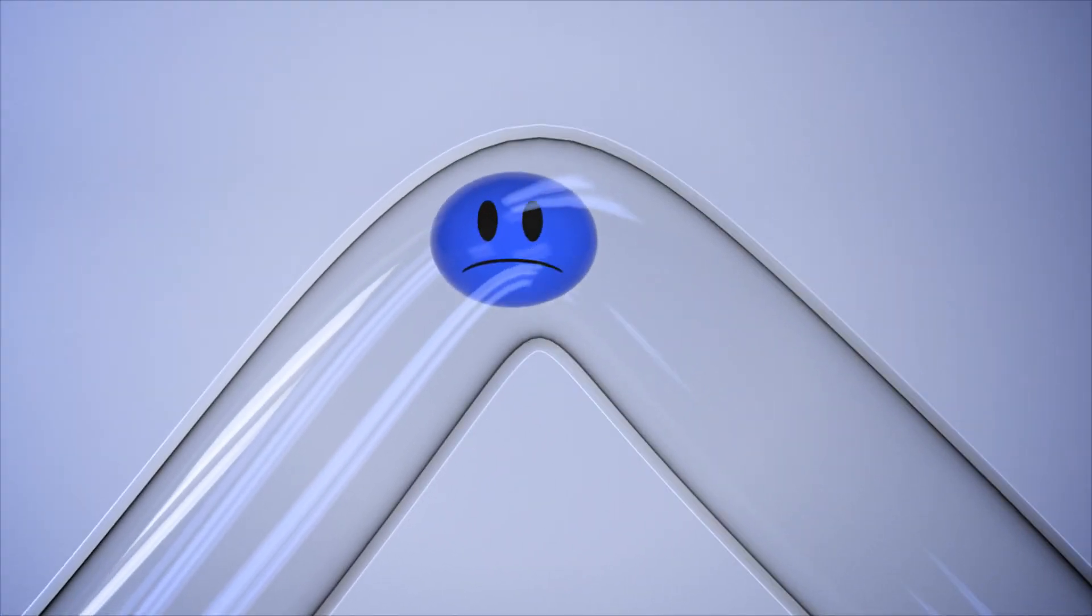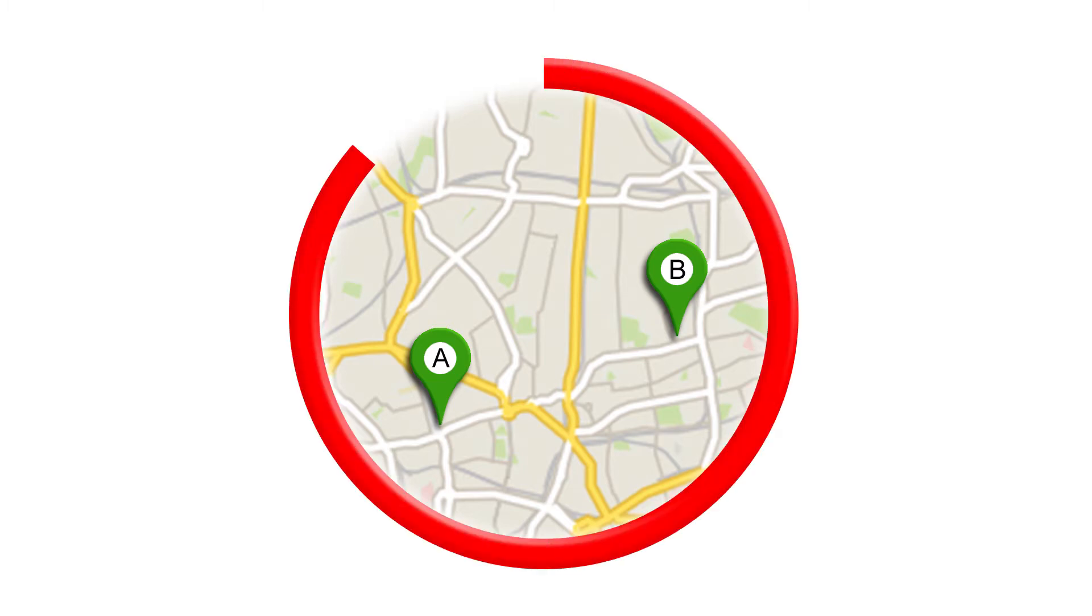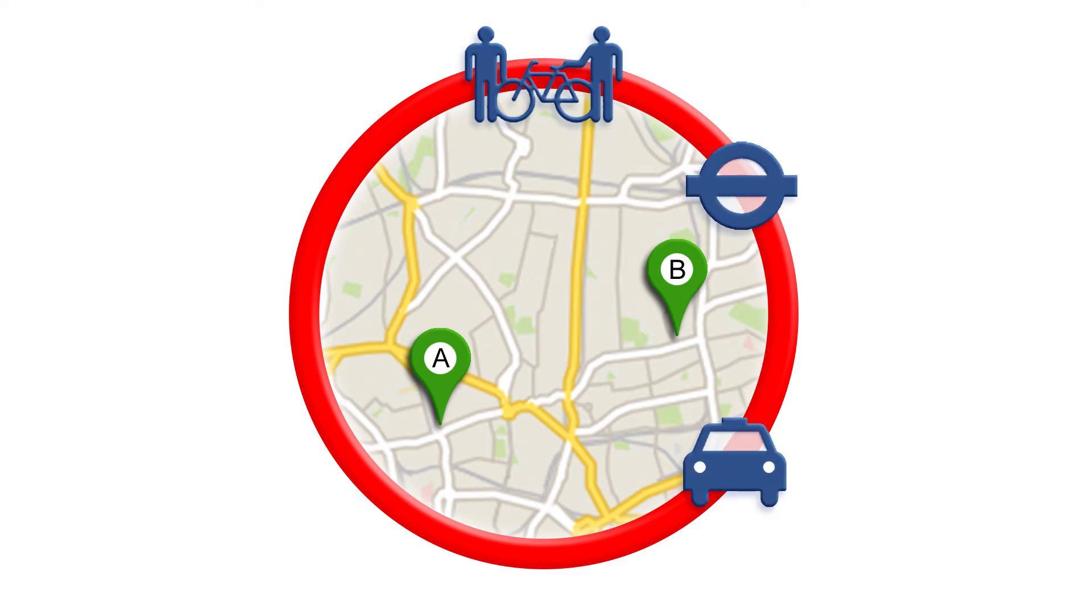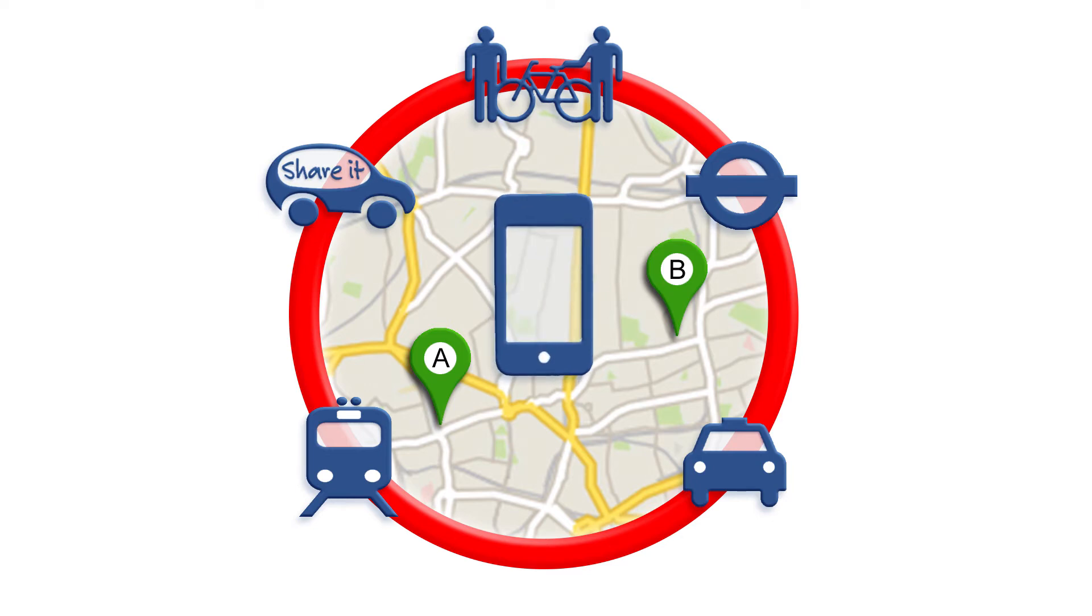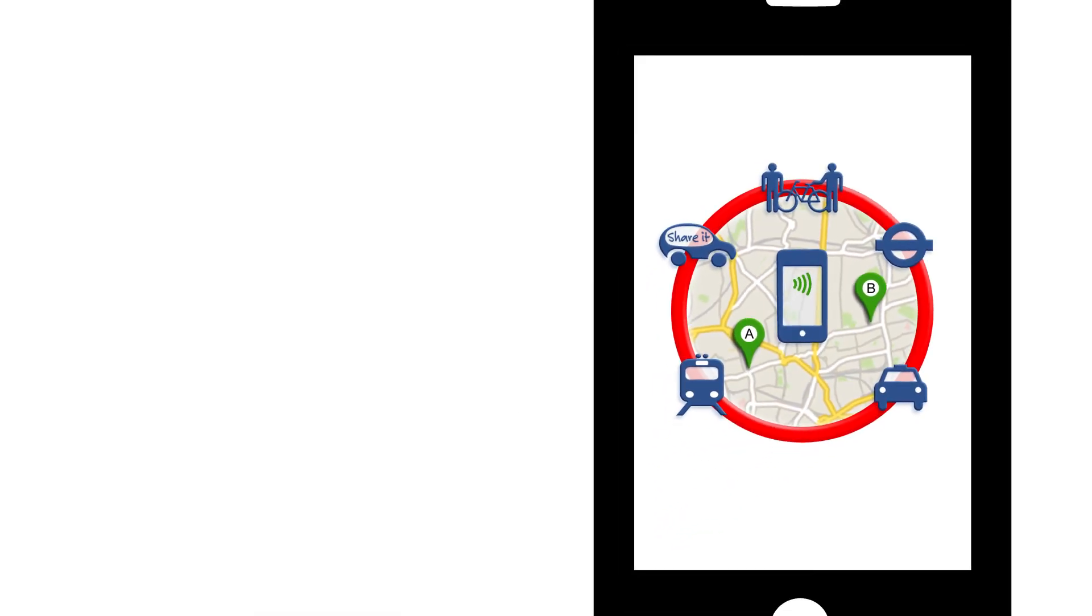If only Bob knew about MAS, the integrated door to door mobility solution. MAS provides multimodal journey planning with real time information for bike sharing, public transport, taxi, rail and car sharing with a single smart ticket to access these modes and one mobility bill at the end of each month. All from the palm of your hand.